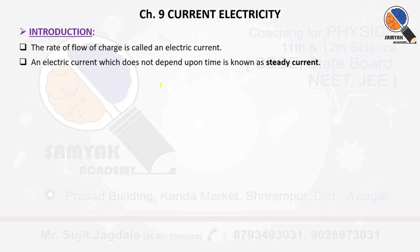Whenever a particular electric current does not depend upon time, it is known as steady current. So when you say that the electric current does not depend upon time, it is referred to as a steady current.